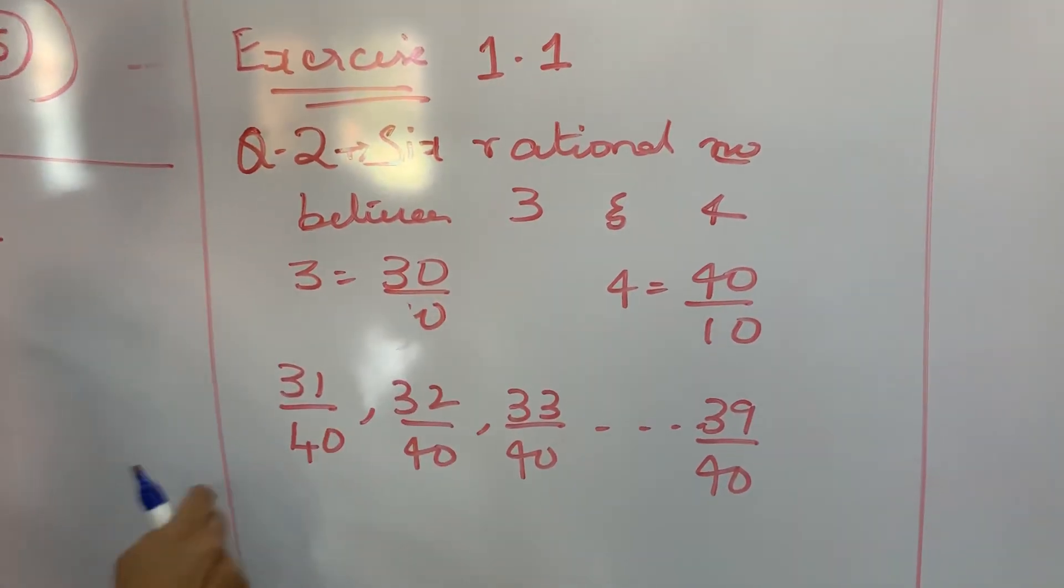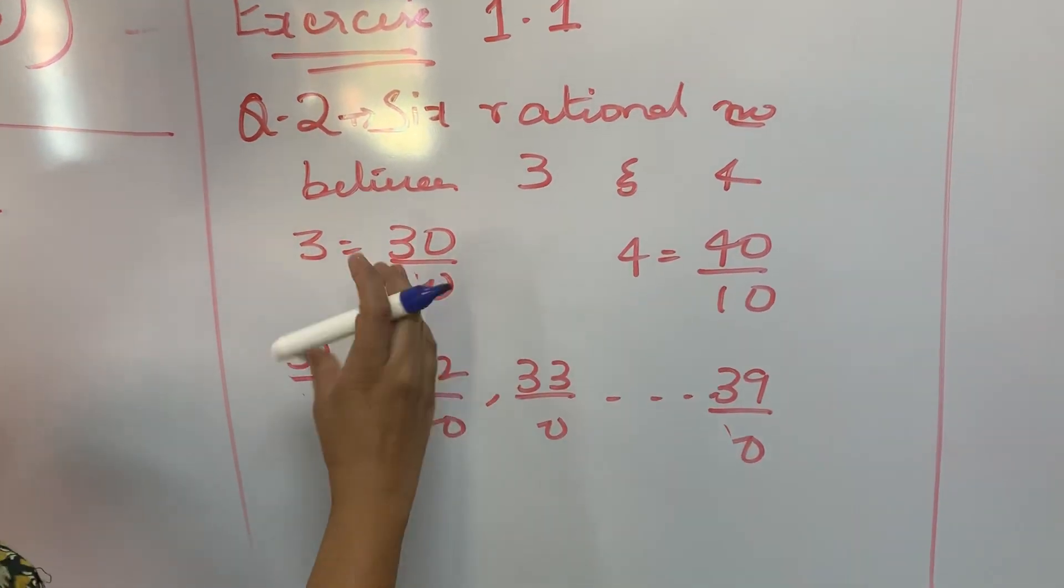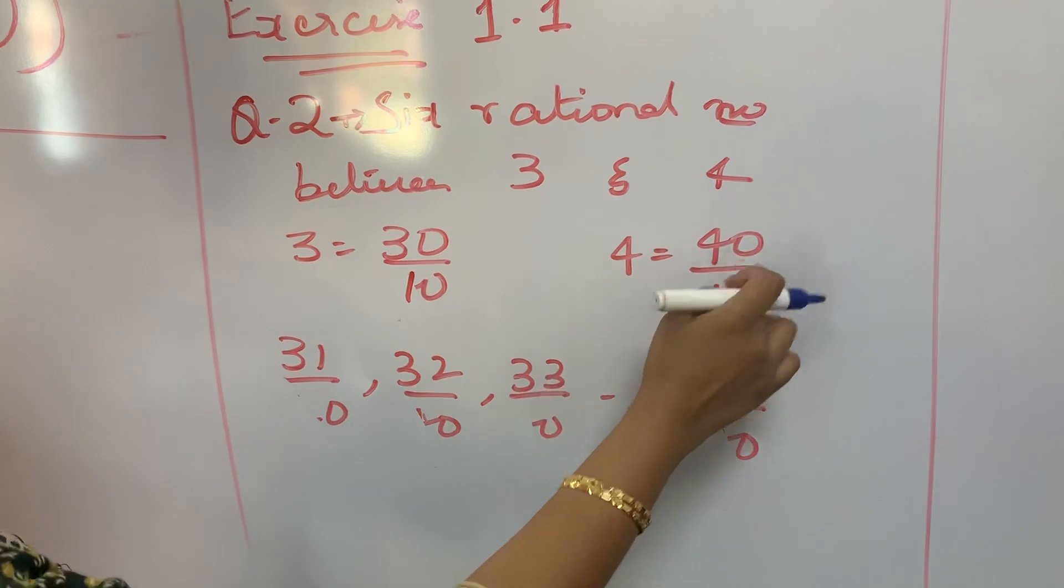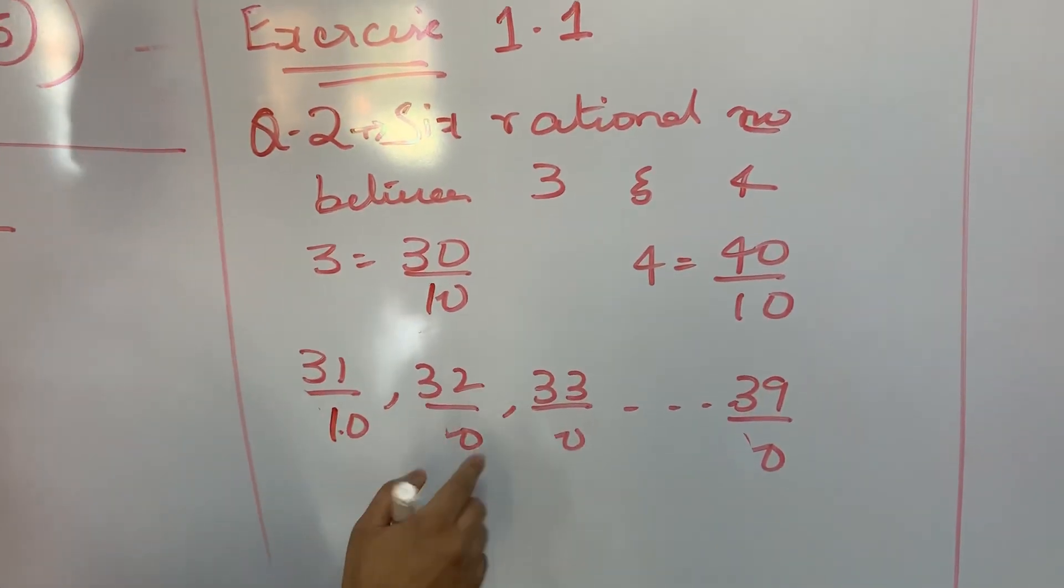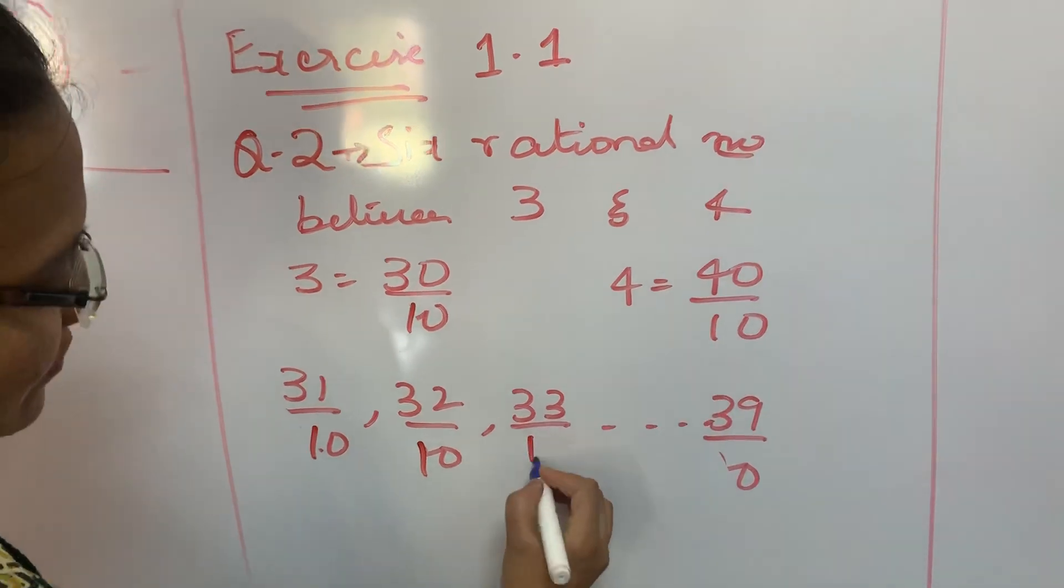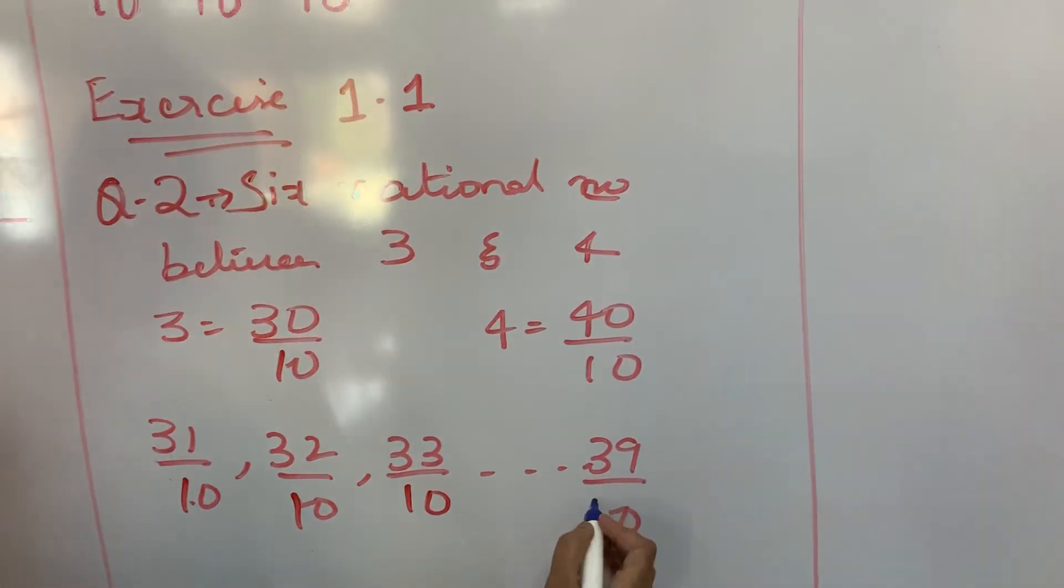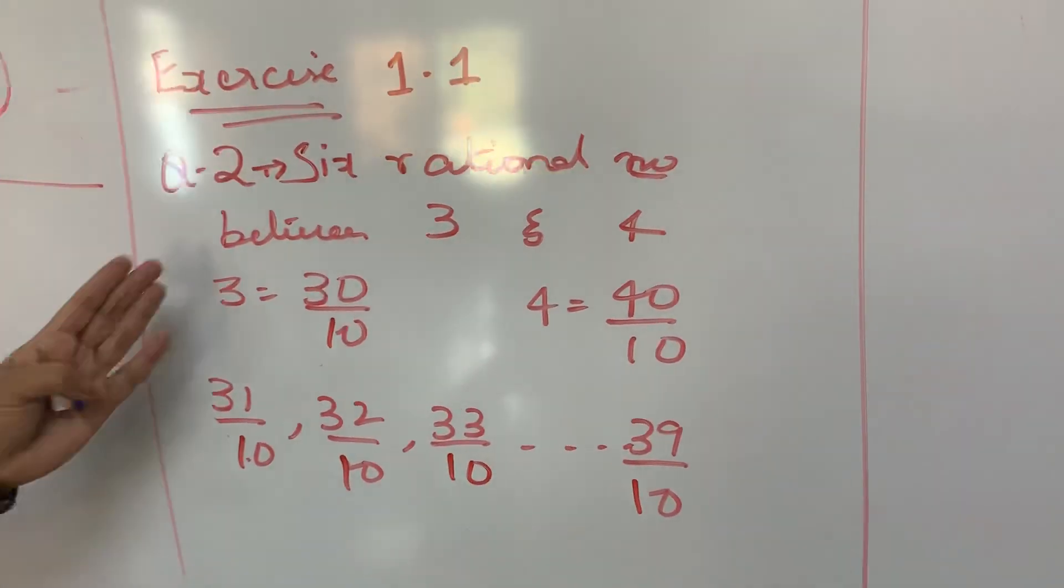Write 3 as 30 by 10 and 4 as 40 by 10. So now we can write many numbers between that: 31 by 10, 32 by 10, 33 by 10, up to 39 by 10. We can write the rational numbers between these two numbers.